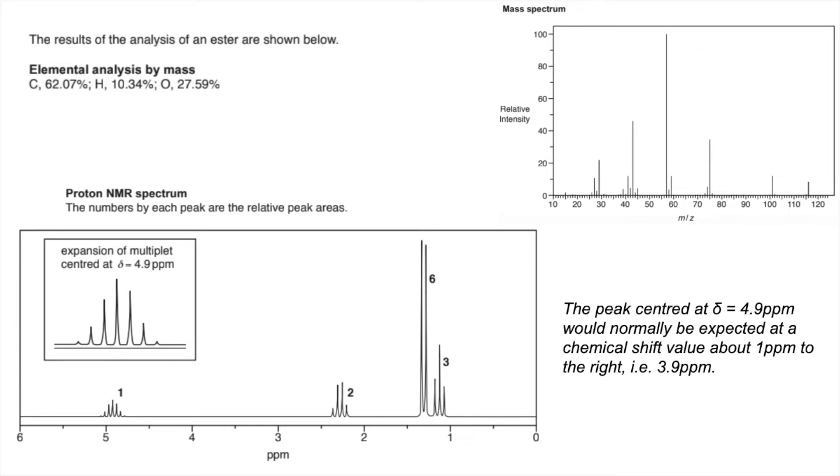So there's the question. We're given some elemental analysis by mass for this ester, the mass spectrum, and the proton NMR spectrum. We've got some extra information down here about the peak centered at delta 4.9. From all of that information, we've got to come up with a possible structure for the ester.